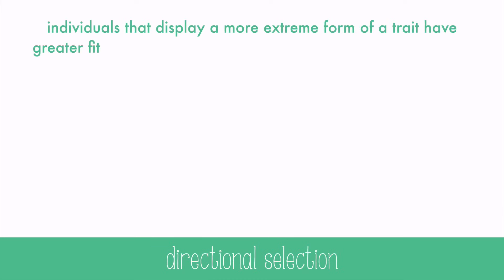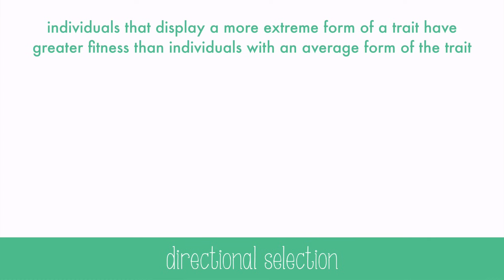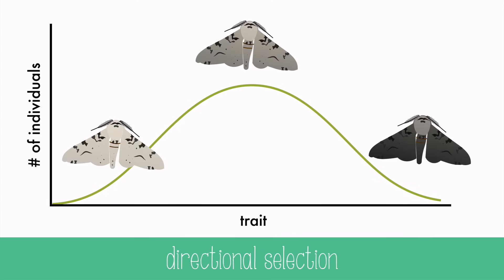In directional selection, individuals that display a more extreme form of a trait have a greater fitness than individuals with the average form of the trait. For example, the peppered moth population of England during the Industrial Revolution had higher frequencies of darker colors because it was well camouflaged in the soot-covered trees. The lighter colored moths would have been easily seen and eaten by birds, and if they're eaten, they can't reproduce.